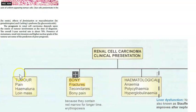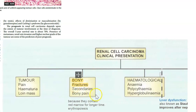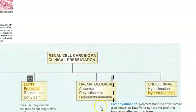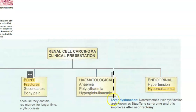The classic clinical triad is flank pain, hematuria, and a loin mass. There can also be bony presentations such as fractures and bone pain, as erythropoietin produced by the kidney causes bones to maintain red marrow longer, making them weaker. Polycythemia can occur due to excess erythropoietin, but anemia can also be associated. Hyperglobulinemia may be present.